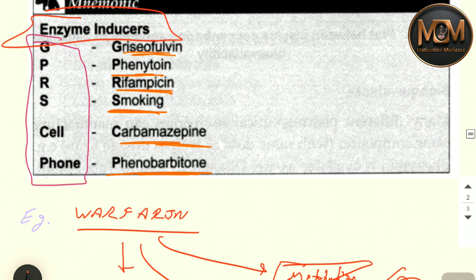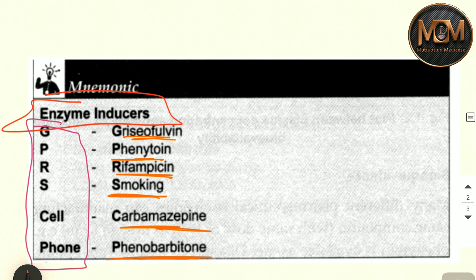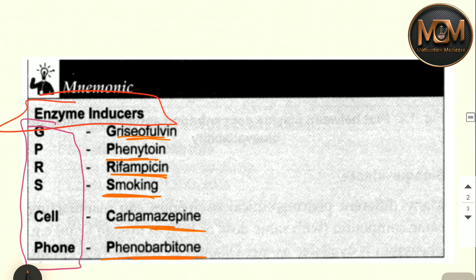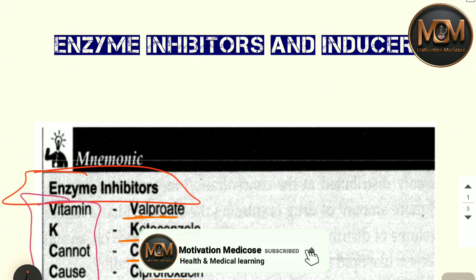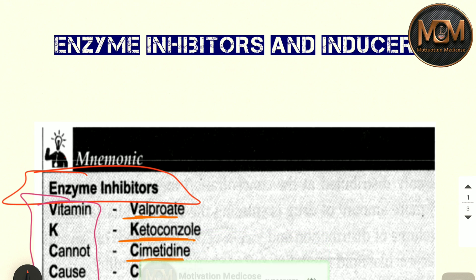So these are the two mnemonics you have to remember: 'Vitamin K Cannot Cause Enzyme Inhibition' for enzyme inhibitors, and 'GPRS Cell Phone' for enzyme inducers. With these two simple mnemonics you can understand this topic of enzyme inducers and enzyme inhibitors. Thank you, guys. If you liked this video, please like, share, subscribe, and don't forget to press the bell icon.